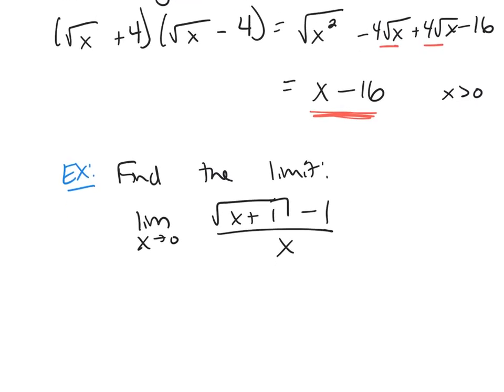So here, if I plug in 0 into the top, what am I going to get? I'm going to get 0. If I plug it into the bottom, I'll get 0, which means I cannot just plug in my number in place of x. I can't just do direct substitution.